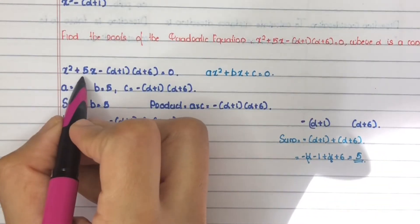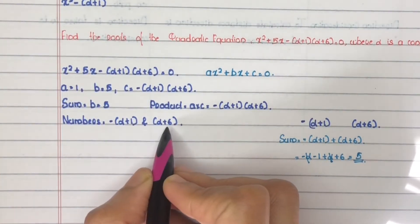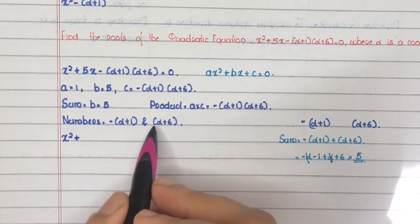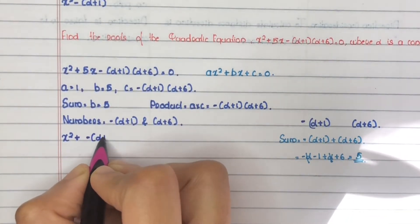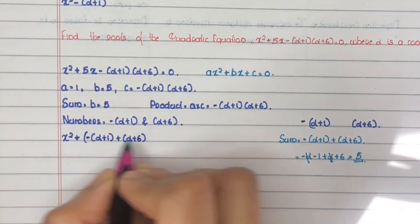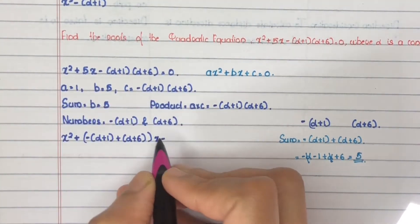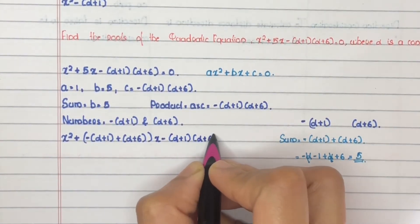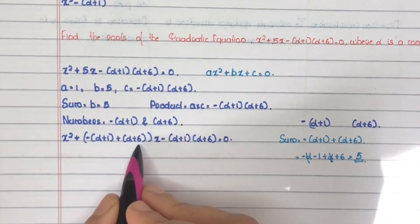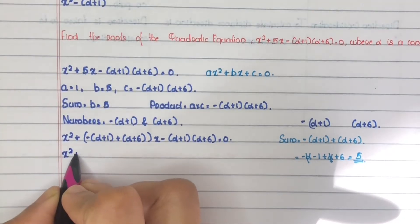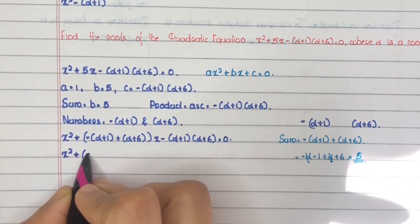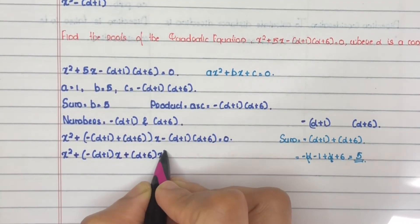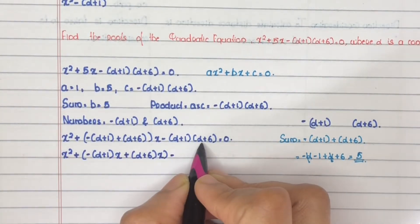Next, split b as minus(alpha plus 1) plus (alpha plus 6). In the equation, replace 5x by substituting the sum of these numbers: x squared plus minus(alpha plus 1) x plus (alpha plus 6) x minus (alpha plus 1)(alpha plus 6) equals 0.